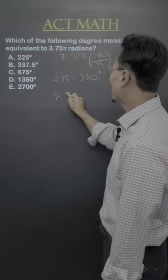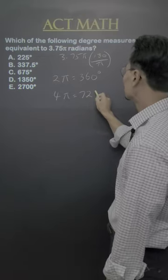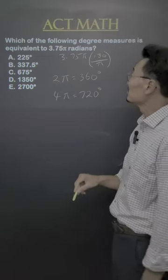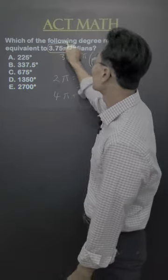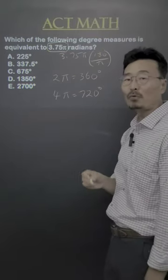then 4 pi must be twice as much, or 720 degrees. Since we're looking for 3.75 pi, which is a little bit less than 4 pi,